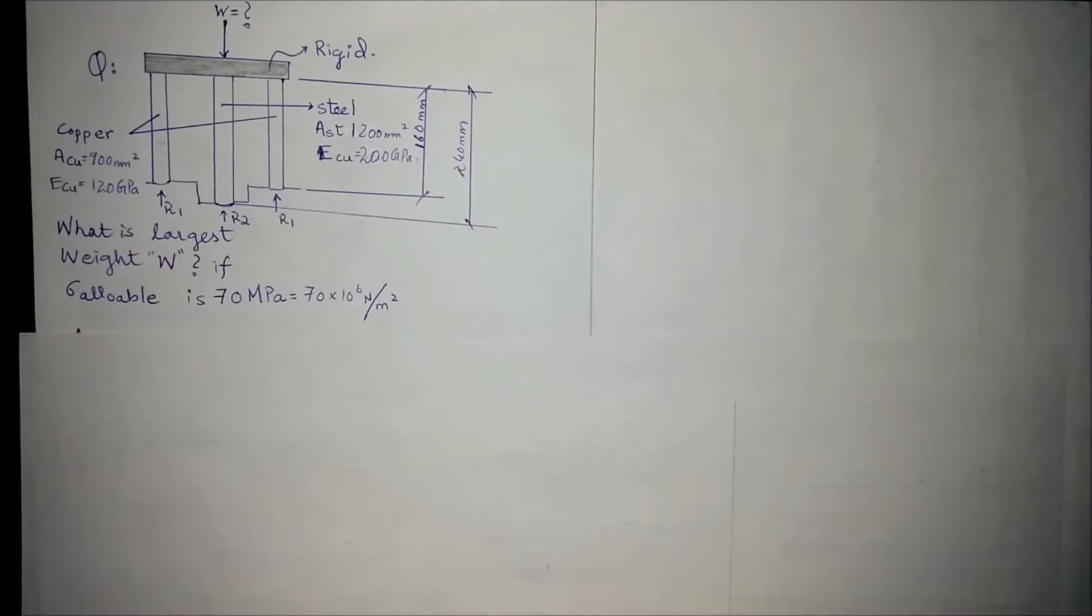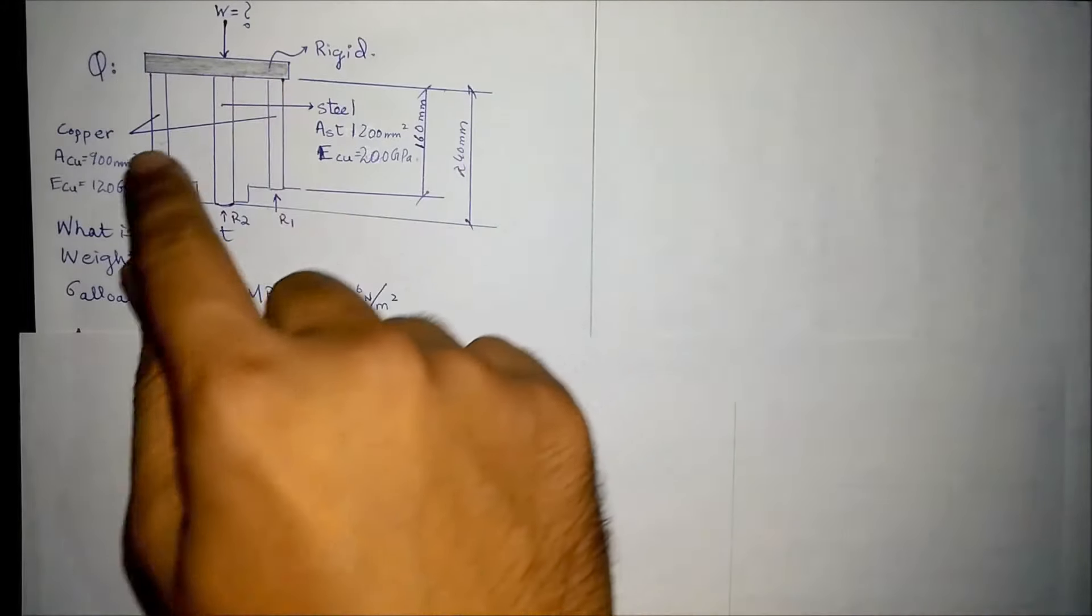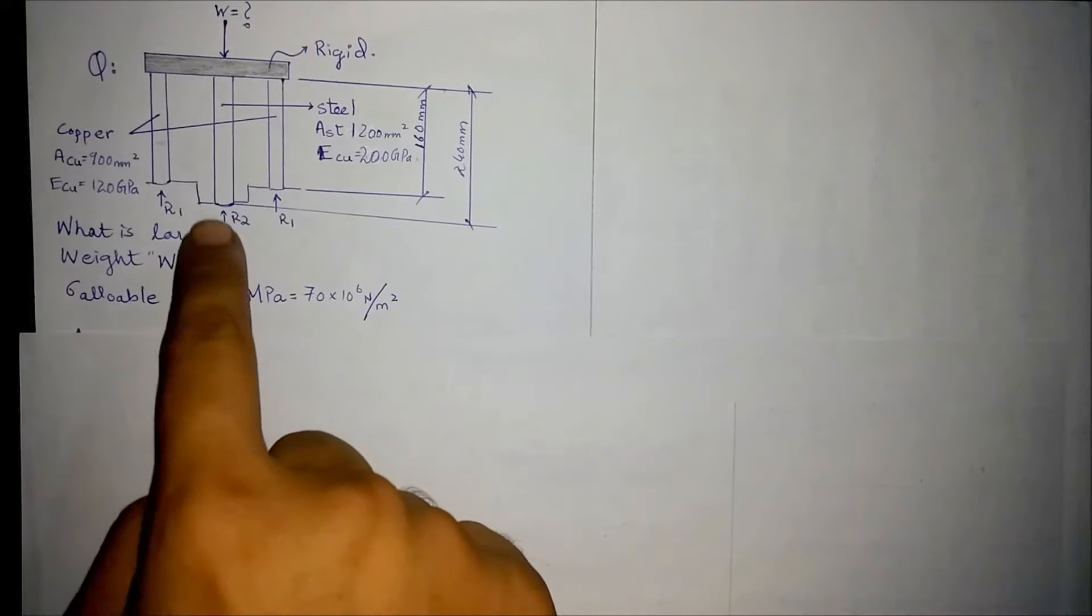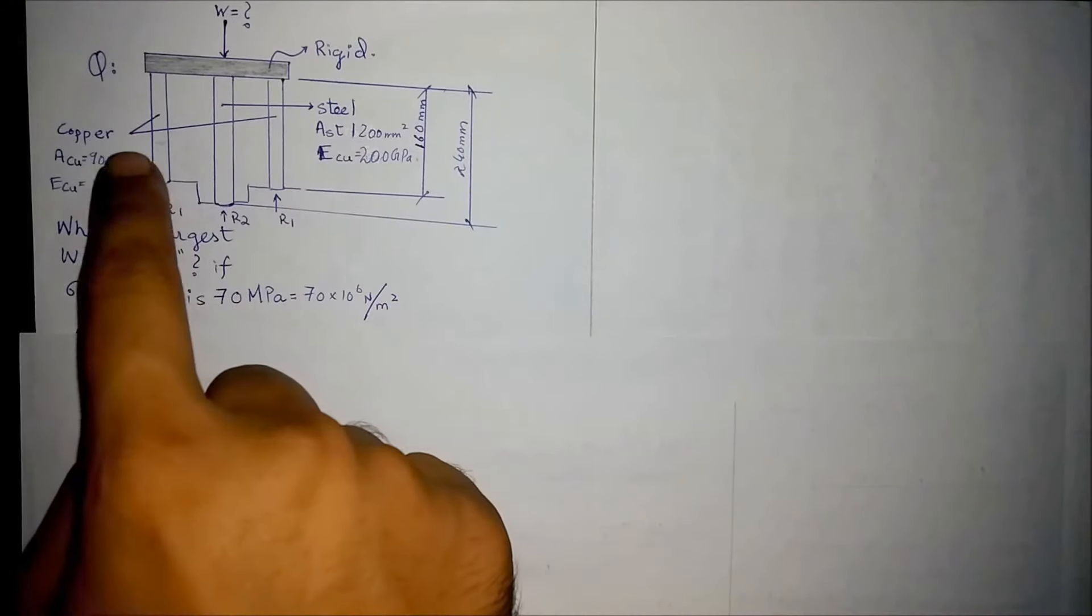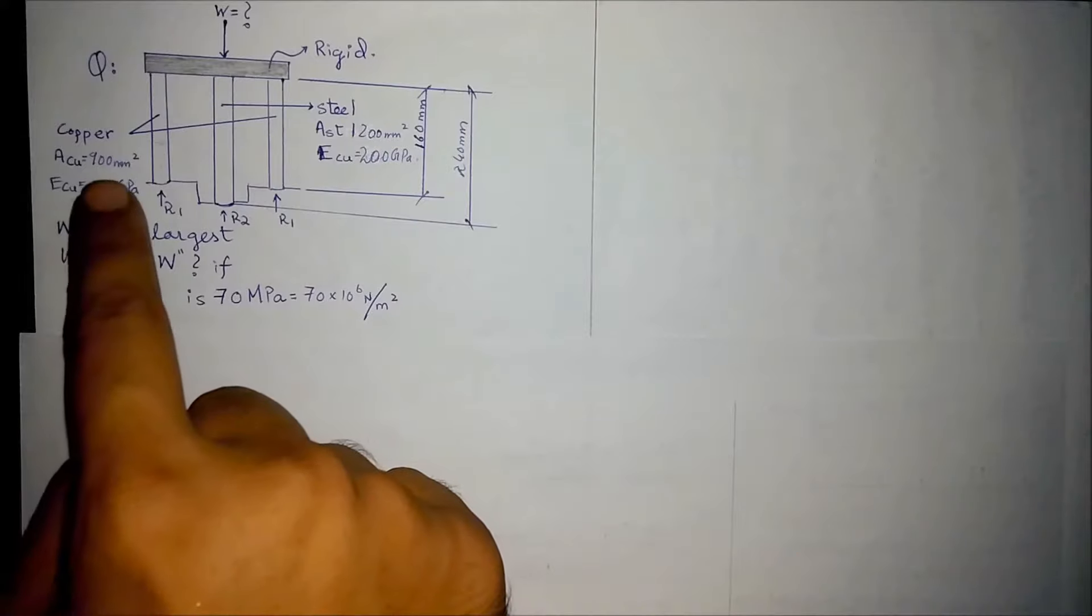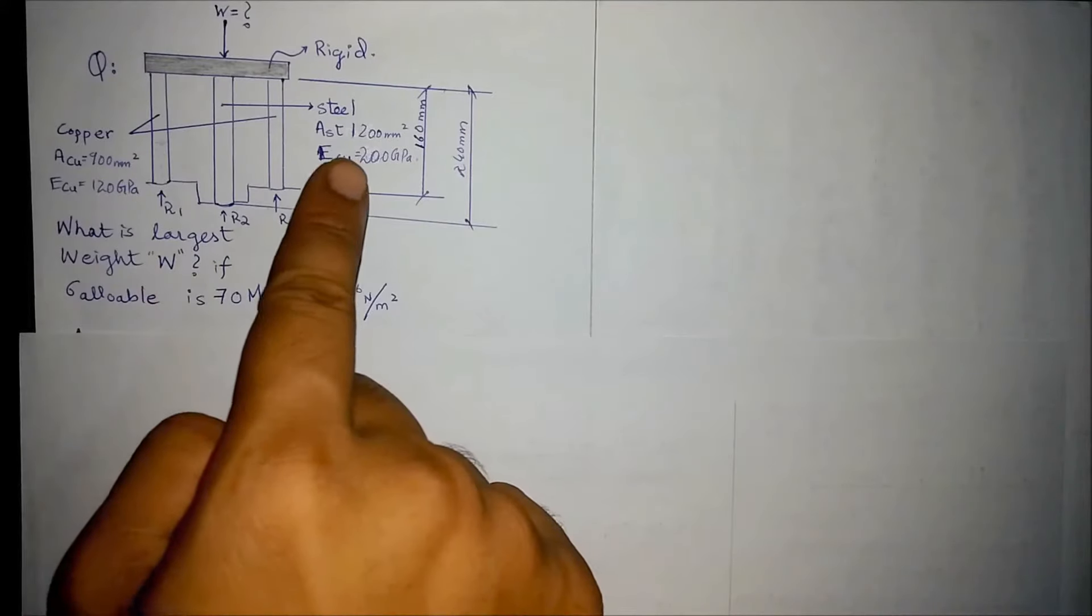In this question we are to find out the maximum weight that can be supported by three piles. The center pile is of steel, the side piles are of copper, with area given for each. The allowable stress in each pile is maximum 70 MPa.